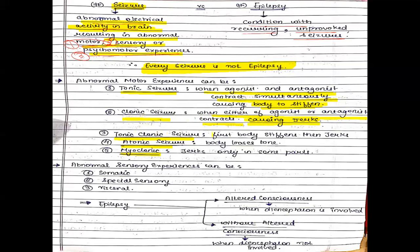When will we call it tonic-clonic? First the body stiffens, then it jerks. So first agonists and antagonists contract simultaneously causing stiffening, and after that the body jerks. This is tonic-clonic seizure. A very good example of tonic-clonic seizure is grand mal seizure. We will also see what is petit mal.